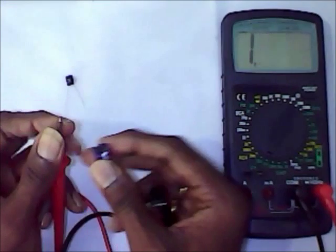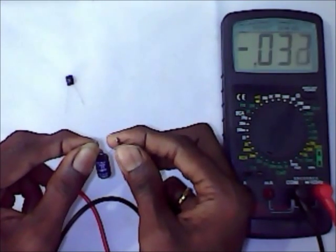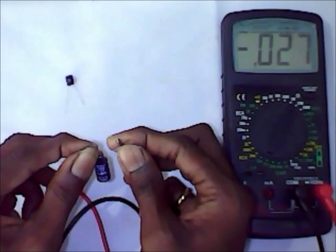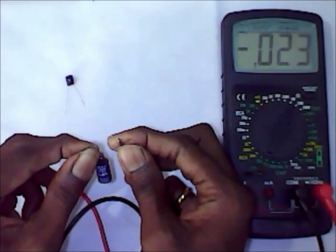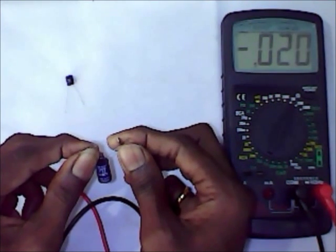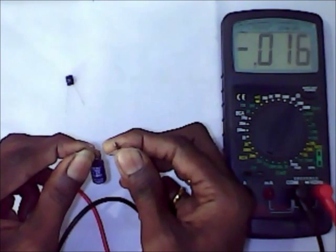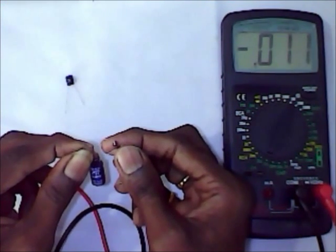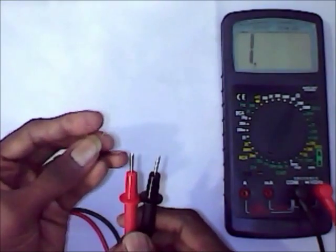Just reverse the terminals. The deflection should be higher first and it should lower down. It should go down slowly. It is going down. It indicates that the capacitor is in good condition because it charges in one direction and when we reverse the terminals, it discharges in the other direction. This is another capacitor.